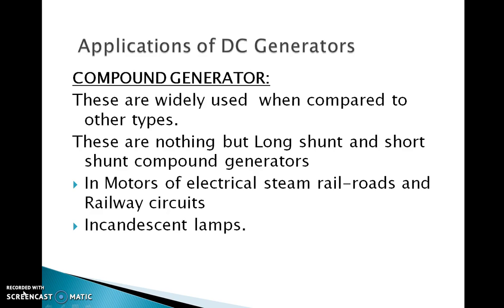The differential compound generator has an external characteristic similar to that of a shunt generator, but with large demagnetizing armature reaction. Hence it is widely used in arc welding, where a larger voltage drop with increase in current is desirable.